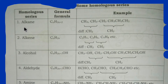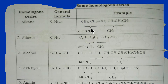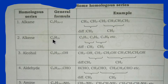To summarize: for alkanes, the general formula is CₙH₂ₙ₊₂. Examples are methane, ethane, and propane — the difference between each consecutive member is CH₂. For alkenes, the general formula is CₙH₂ₙ.